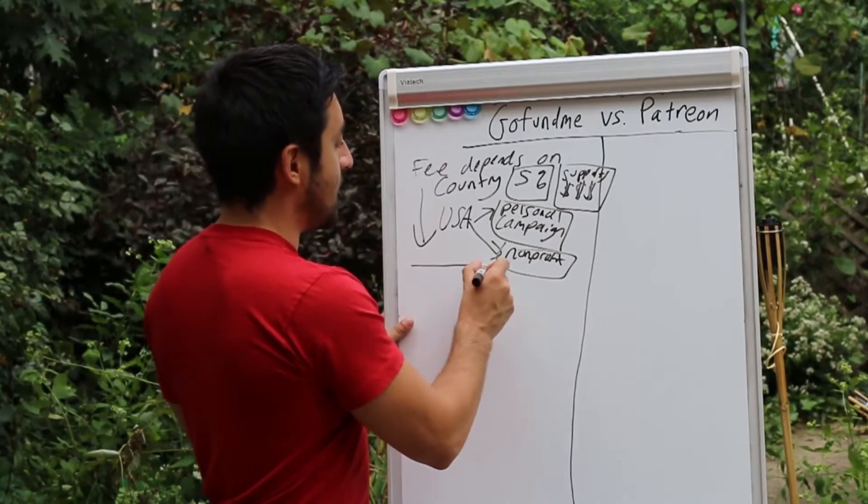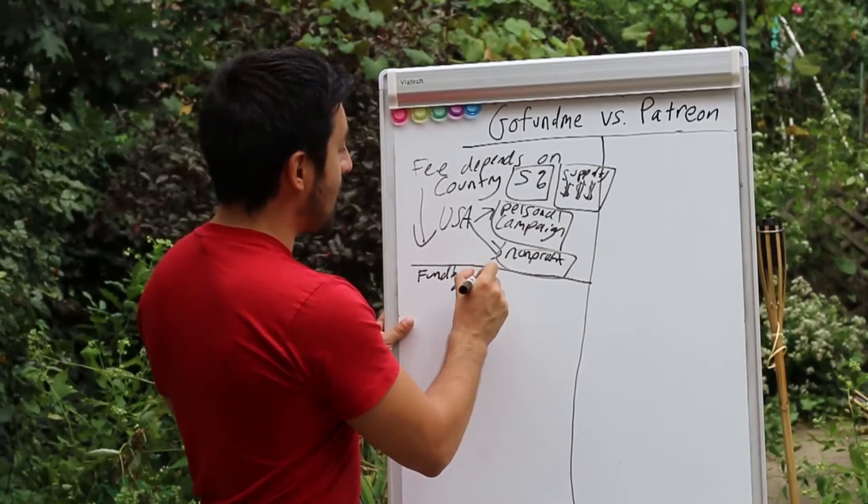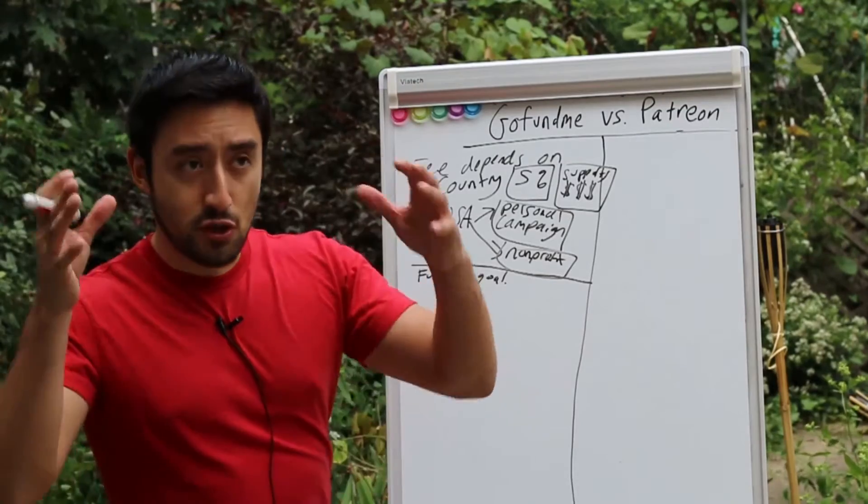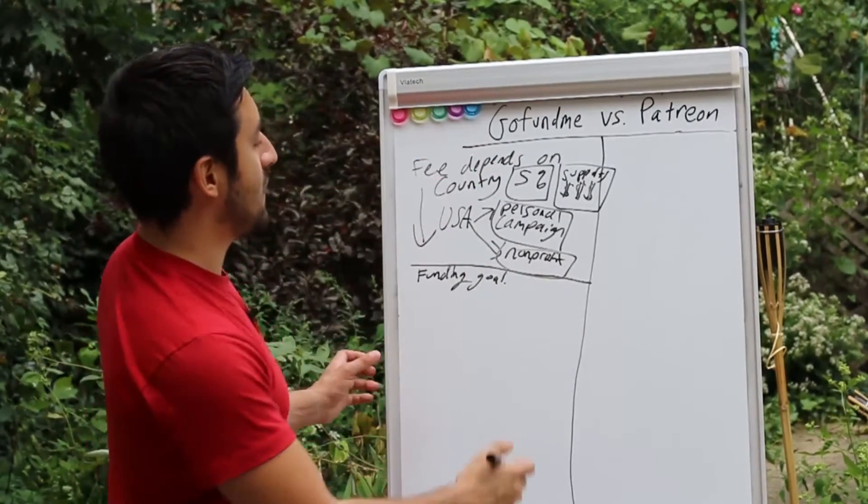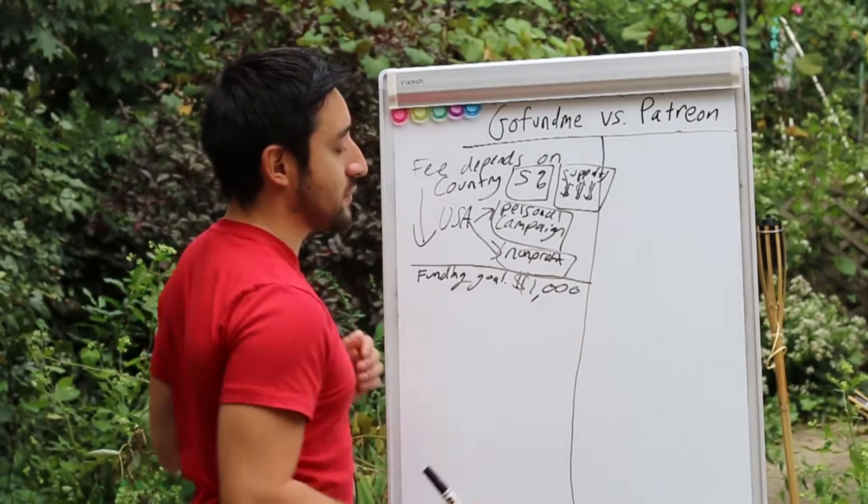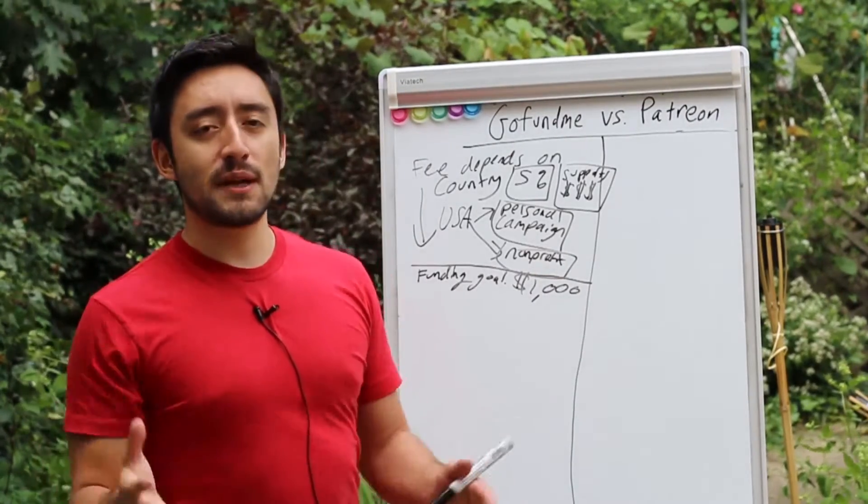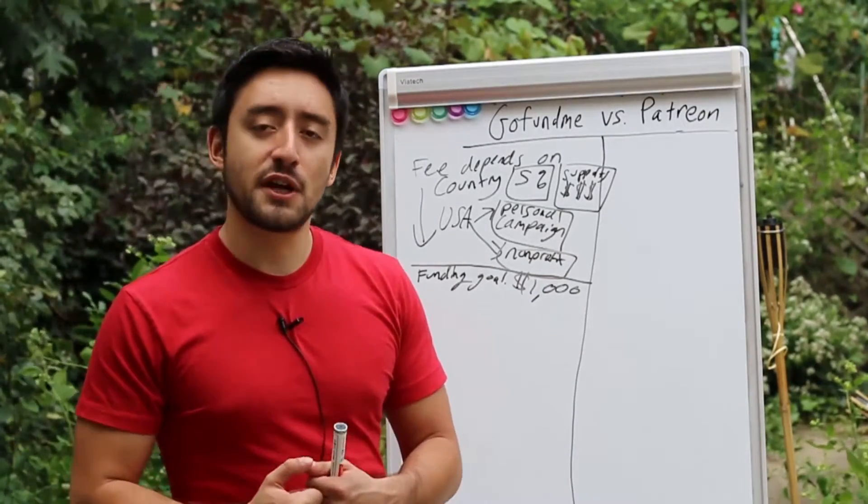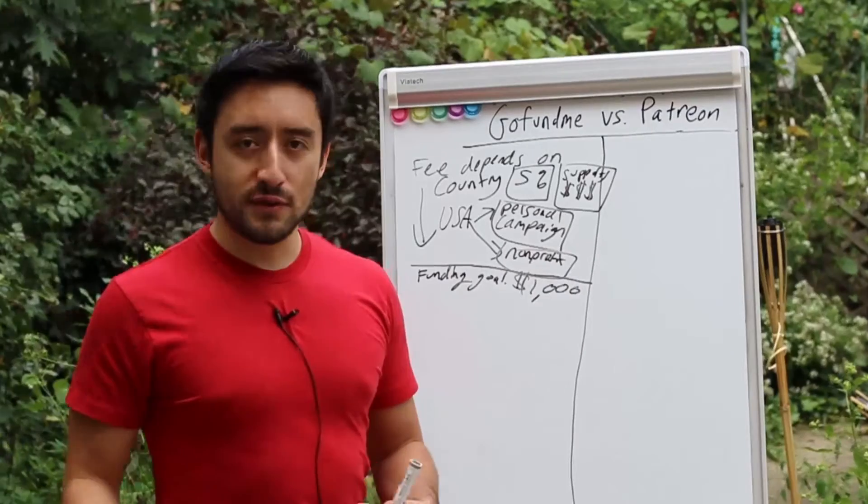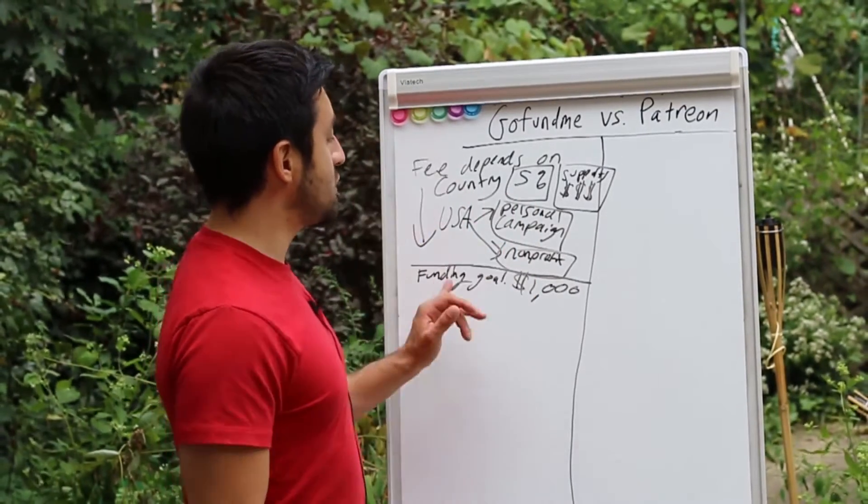Another thing when it comes to GoFundMe is you always have a funding goal and can have a funding duration. The funding goal is the target amount you're trying to raise. The average amount raised is just under $1,000 for a personal crowdfunding campaign. They release those statistics.